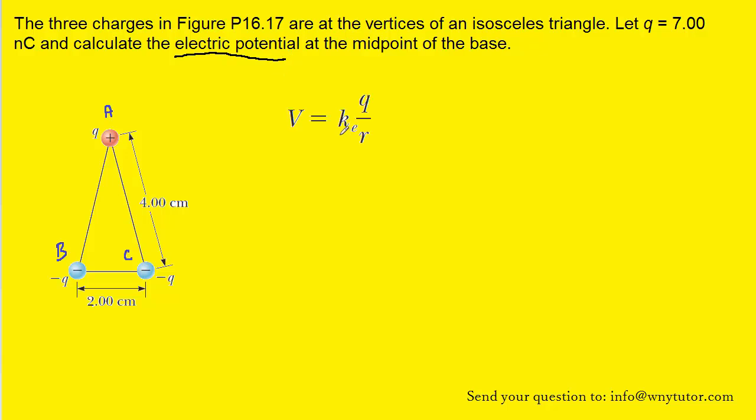Now in this equation we have V representing the electric potential. K is a particular constant that we will mention later. Q is the value of the charge, and R would be the distance from the charge to the location.